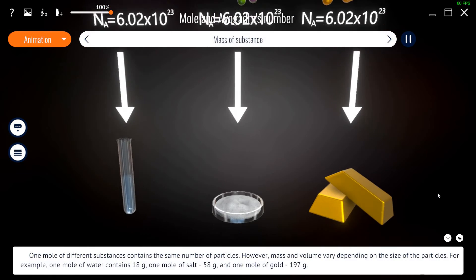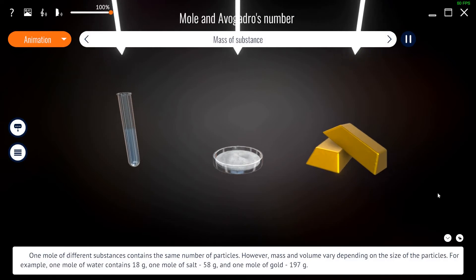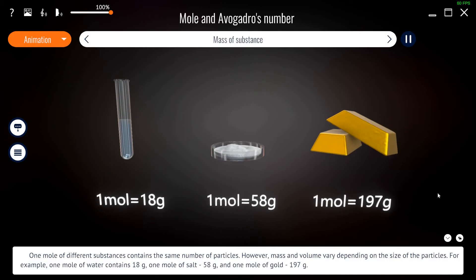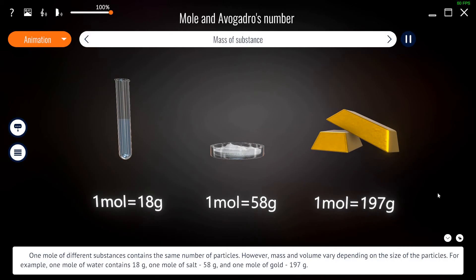One mole of different substances contains the same number of particles. However, mass and volume vary depending on the size of the particles. For example, one mole of water contains 18 grams, one mole of salt 58 grams, and one mole of gold 197 grams.